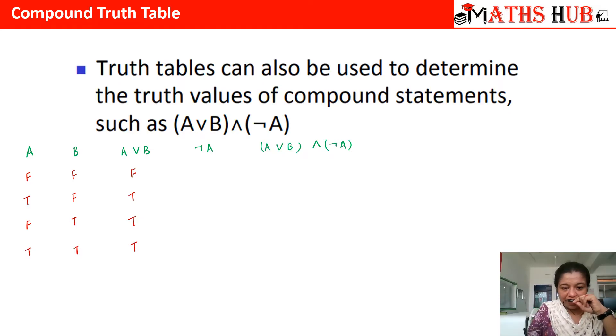Now what is negation A? Whenever A is false, negation A is true, and whenever A is true, negation A is false. Now let us combine them with the and operator. F and T is always going to be F. T and F is always going to be F. T and T will always be T, and T and F will always become F.